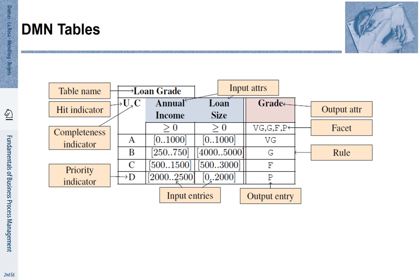We have to read this table as follows. The rule with the A priority is the rule in row A, referring to an annual income in the range from 0 to 1000 and the loan size from 0 to 1000. The corresponding grade is VG — very good. The second row is referred to as B: an annual income between 250 and 750, and a loan size that is much larger, 4000 to 5000. The grade is considered to be good. In this way we can read a table row by row, and if a unique hit applies, we choose the first rule according to the priorities we define to determine the output.